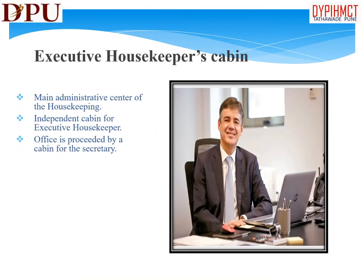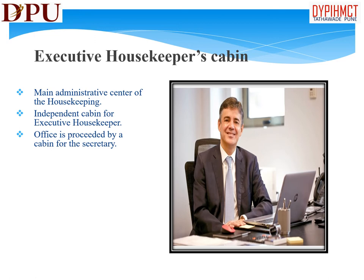Let's see the functions of various sections in the housekeeping department. Executive housekeeper's cabin: the executive housekeeper should have an independent cabin, since it is the administration center of the department. A glass-paneled door office with blinds to provide privacy at times — such as when meetings are conducted and confidential issues are discussed — is most appropriate. The cabin should have one entrance cum exit door where entry is controlled by the secretary. Ample built-in shelves and cupboards with locks should be provided to store files and records.